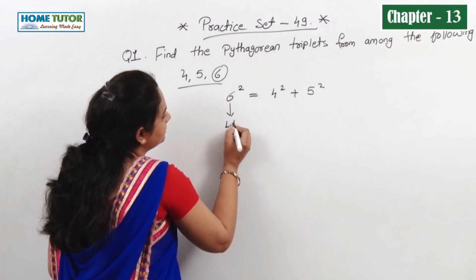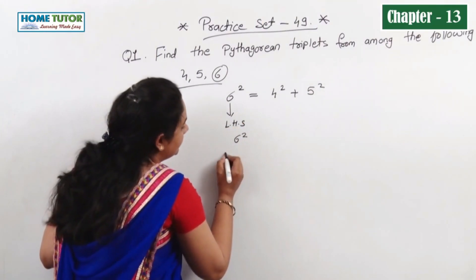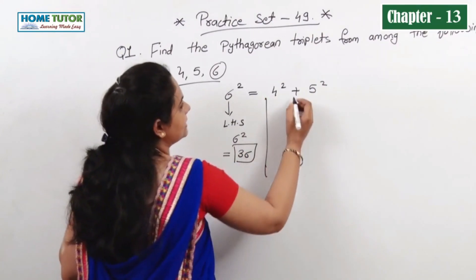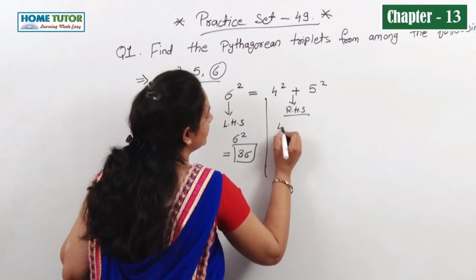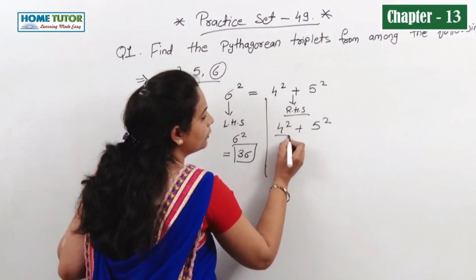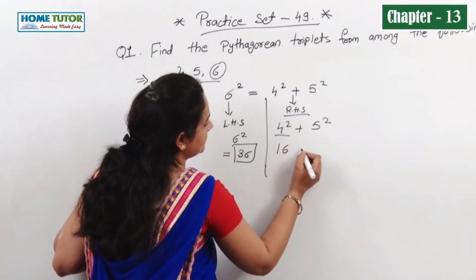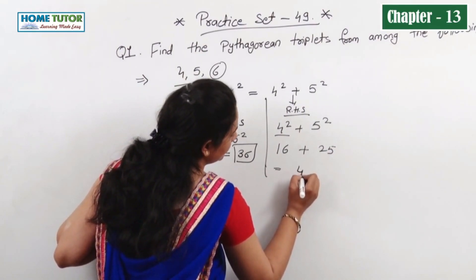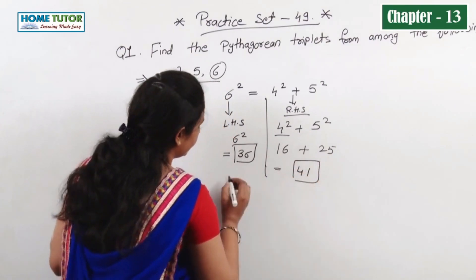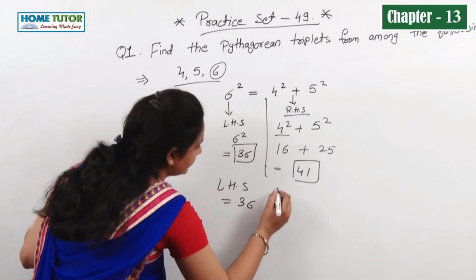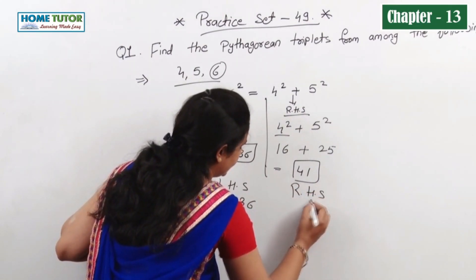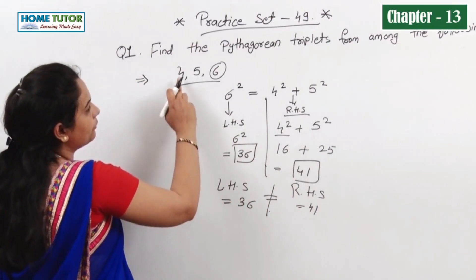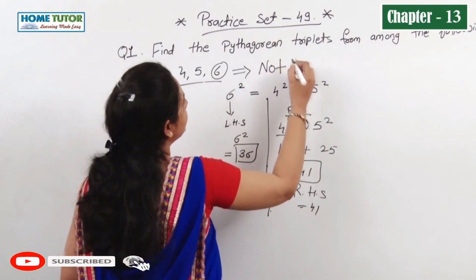Let's solve. LHS: 6 squared means 6 multiplied by 6, which is 36. RHS: 4 squared plus 5 squared — 4 multiplied by 4 is 16, plus 5 squared is 25. The addition gives 41. LHS is 36 and RHS is 41 — they are not equal. So I can say 4, 5, 6 is not a Pythagorean triplet.